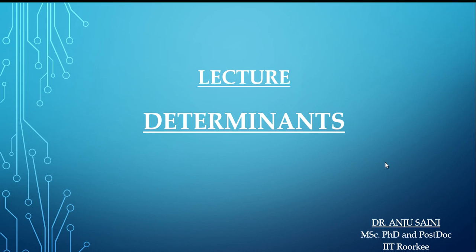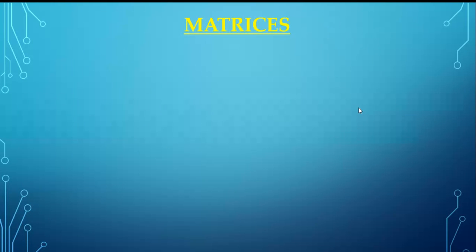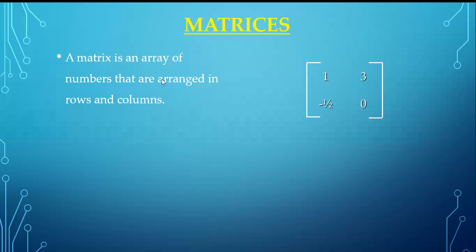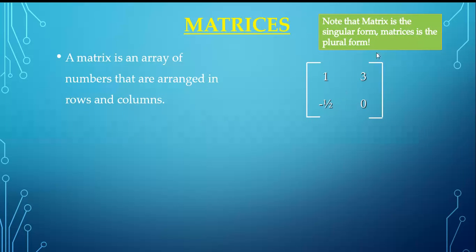Welcome. In this lecture we start the next unit on determinants and matrices. First, a matrix is an array of numbers arranged in rows and columns. The elements are enclosed in square brackets. Note that 'matrix' is the singular form and 'matrices' is the plural form.